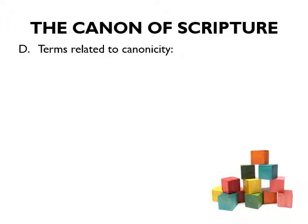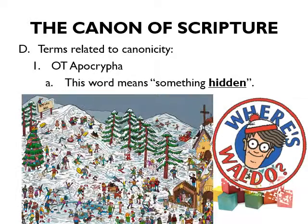Let's start by talking about various terms related to canonicity. The first term I want to highlight is what we call the Old Testament Apocrypha. This word 'Apocrypha' means something hidden, something that we didn't previously know.